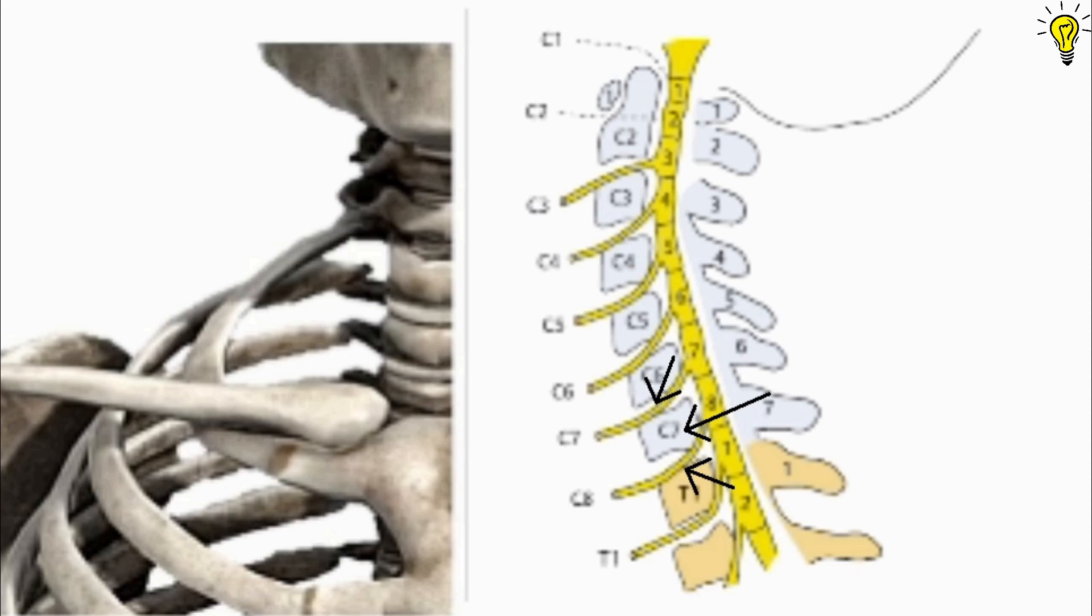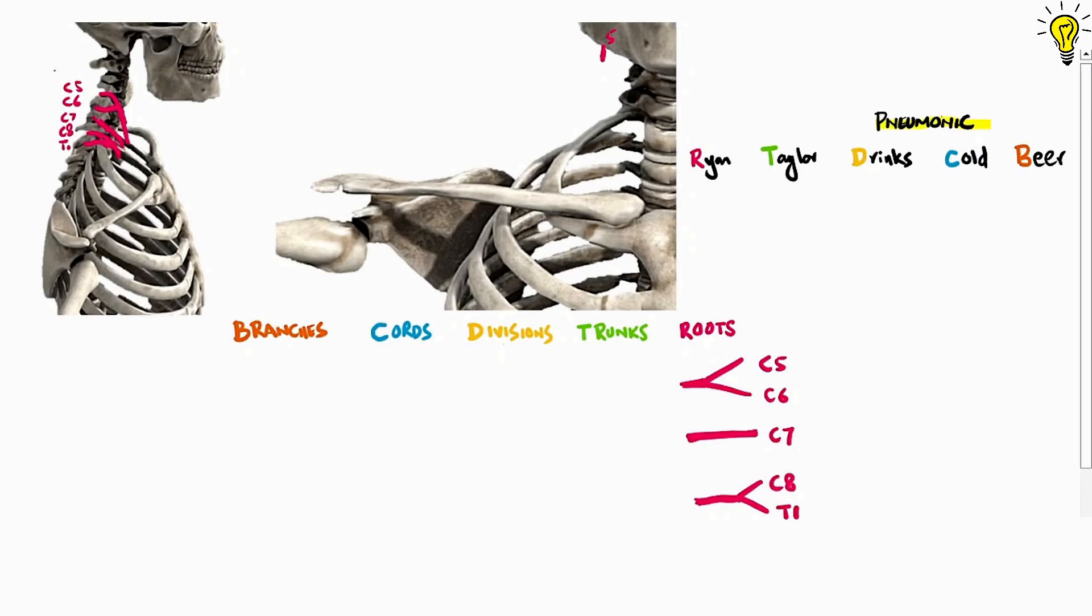The nerve root coming from above it is C7 and the one emerging from below it is C8. Beyond this point, every nerve root emerges from below the respective vertebra like T1 emerging from below the first thoracic vertebra. This completes zone 1 of brachial plexus, the roots.